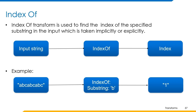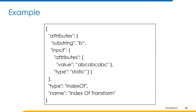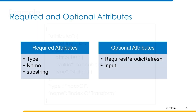Now let's understand how to build a transform using this operation. The example can be built in this format where the name of the transform is index of transform and type is index of. Input is provided in the input attribute and substring b is provided in the substring attribute to get the index. The first occurrence of letter b is at index 1, so the value 1 is returned as output. The required attributes are type, name, and substring. The optional attributes are requires periodic refresh and input.